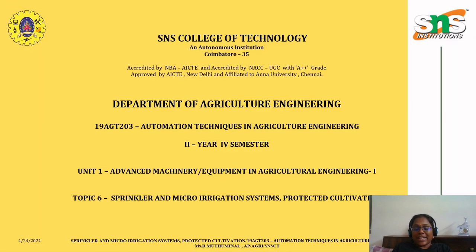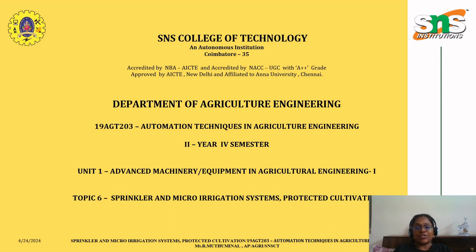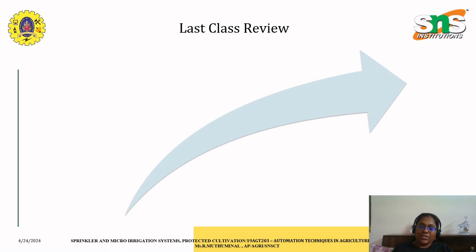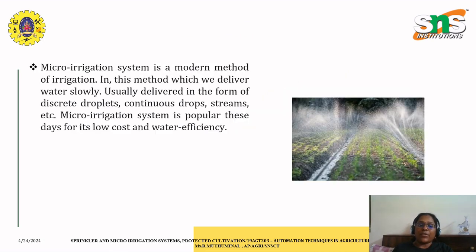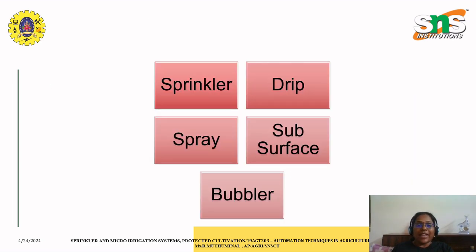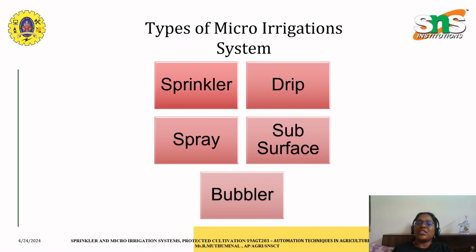Welcome back to our lecture series. Today we'll see something about sprinkler and micro irrigation systems, which is the continuity of the previous class under the topic automation techniques in agriculture engineering, under advanced machinery and equipment in agricultural engineering for second year, fourth semester students. In the previous class we covered what micro irrigation systems are and their benefits, and how micro irrigation systems help in increasing crop yield. Today we will see the continuity of different types of irrigation systems.